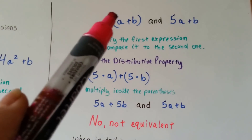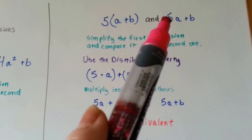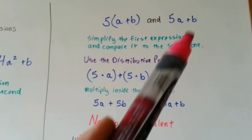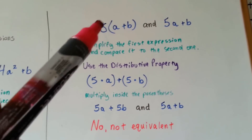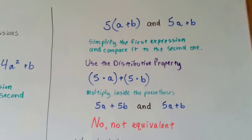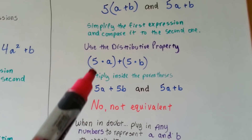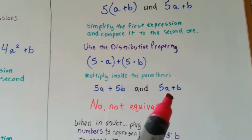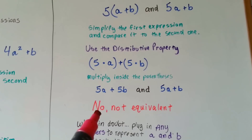What if we had 5 times (a plus b)? We know this means multiply. And then we have 5a plus b — is it the same thing? Let's simplify the first expression to compare it to the second one. We'll use the distributive property, just like the mother bird feeding her baby birds in the parentheses nest. So we're going to do 5 times a plus 5 times b, getting 5a plus 5b. The other one is 5a plus b. Now, are they the same thing? No, they're actually not.